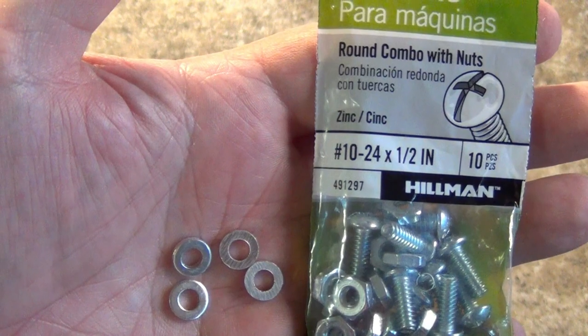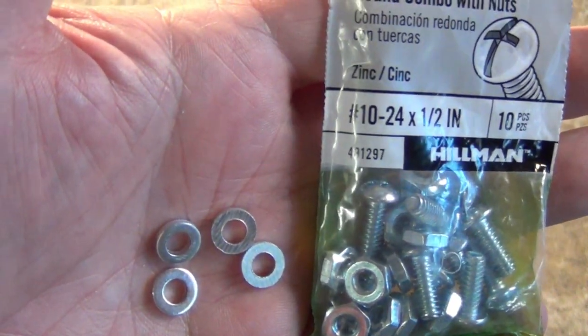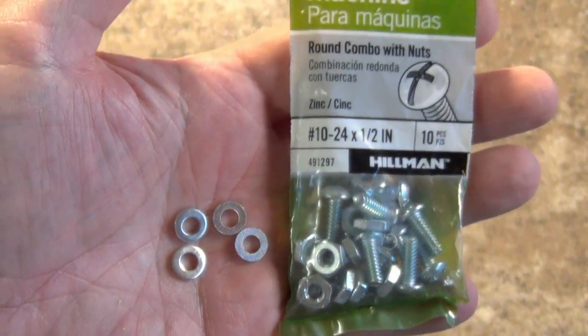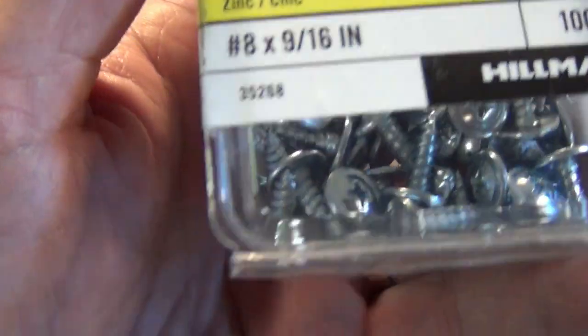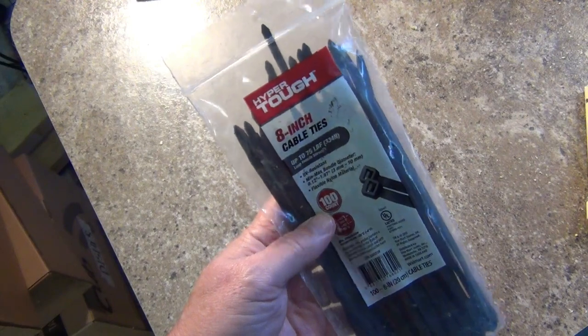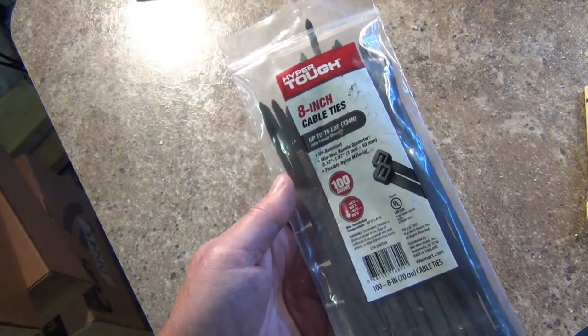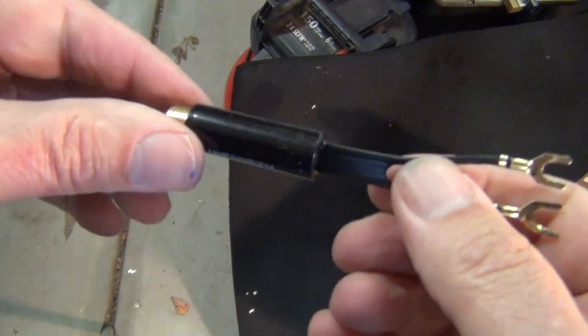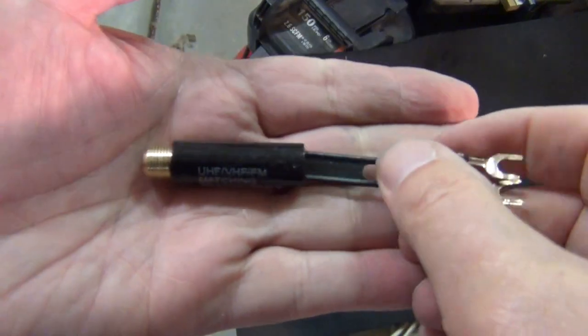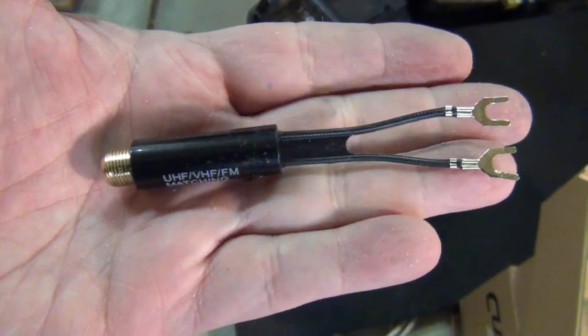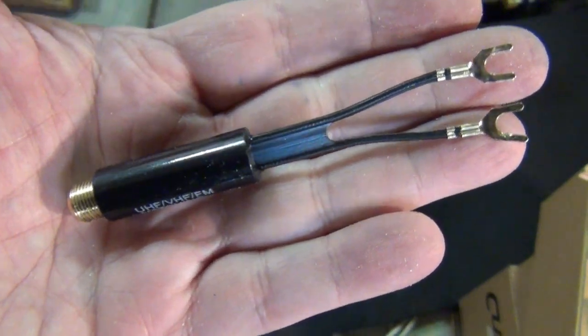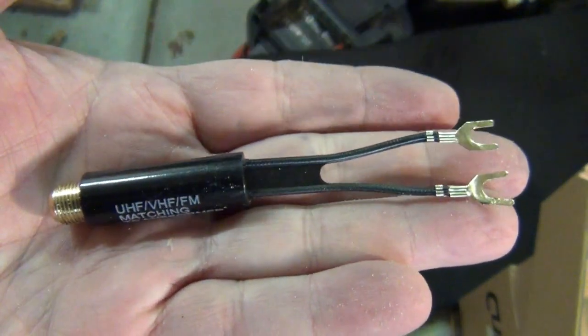For the terminals you will need two small machine screws plus washers and nuts like these. Get yourself one self-tapping screw. I use these number eight lath screws. Grab some heavy wire ties and some electrical tape too. Finally get a matching transformer to attach your finished antenna to your coax. If you want to skip the transformer that's up to you, but first watch my video on why you should use one. I'll put a link in the description.